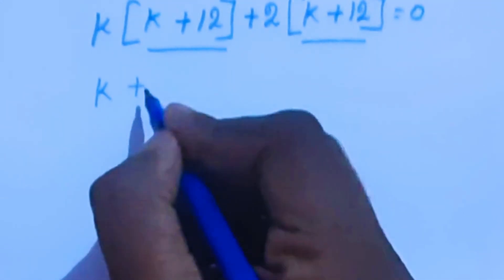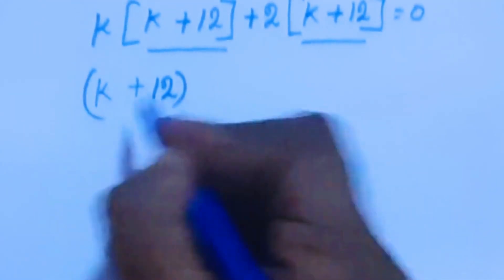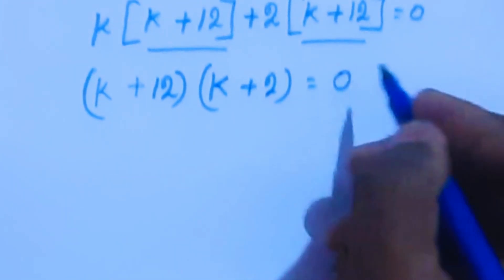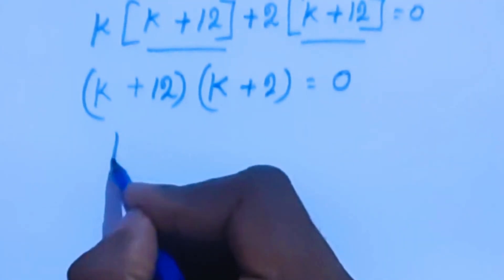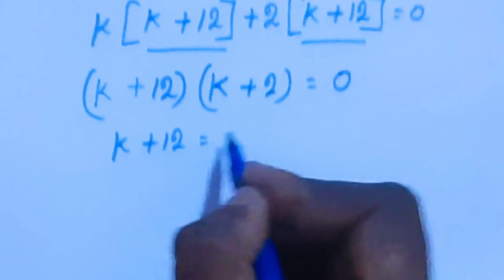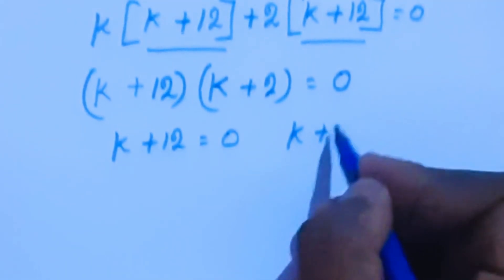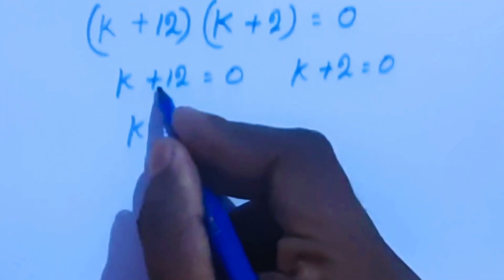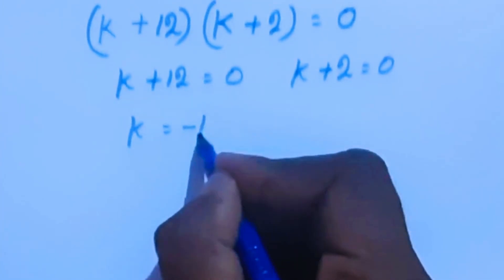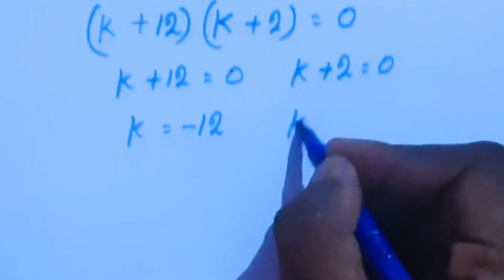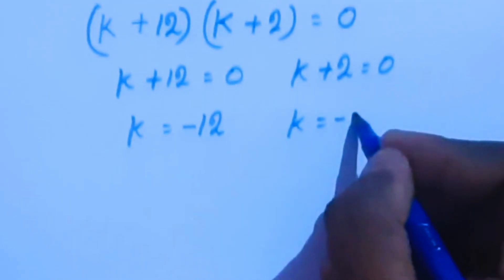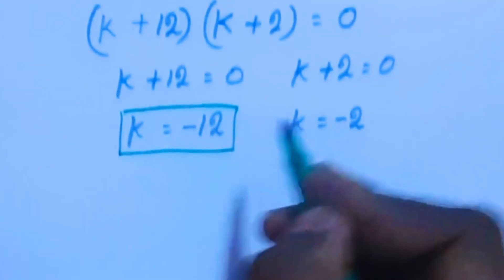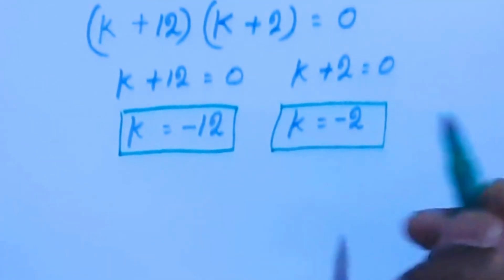So we have (k plus 12)(k plus 2) equal to 0. This gives two equations: k plus 12 equal to 0, and k plus 2 equal to 0. From these, k equal to minus 12 and k equal to minus 2. We have found k equal to minus 12 and minus 2 in the first method.